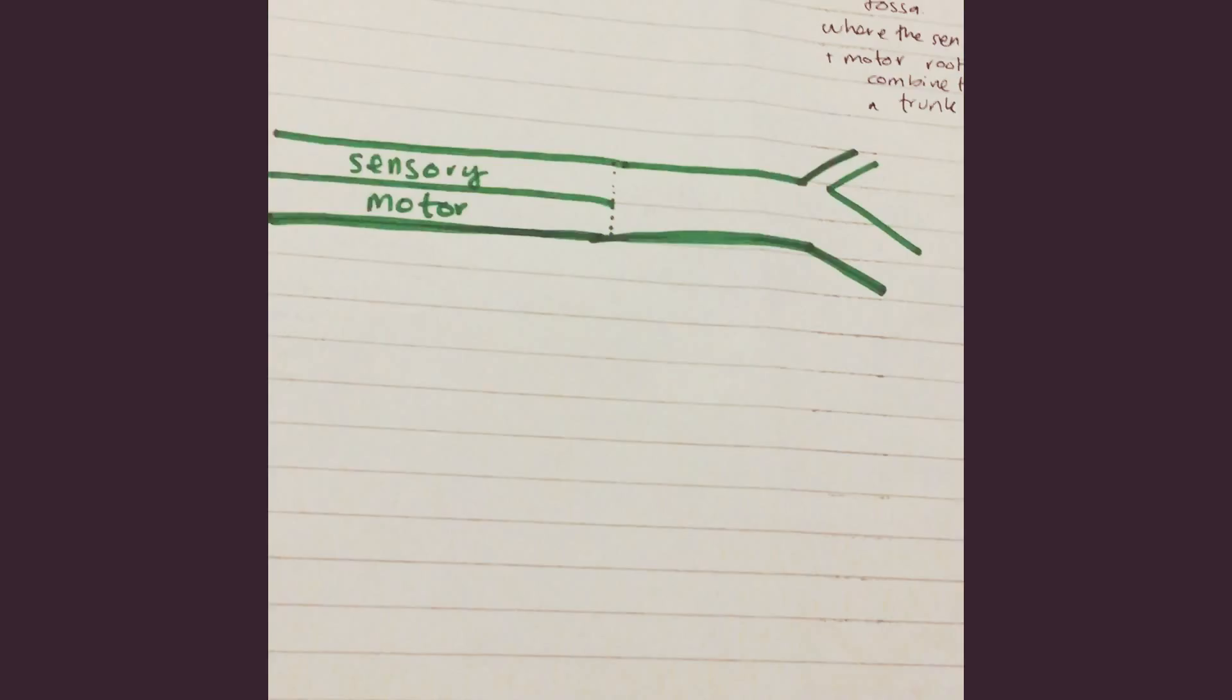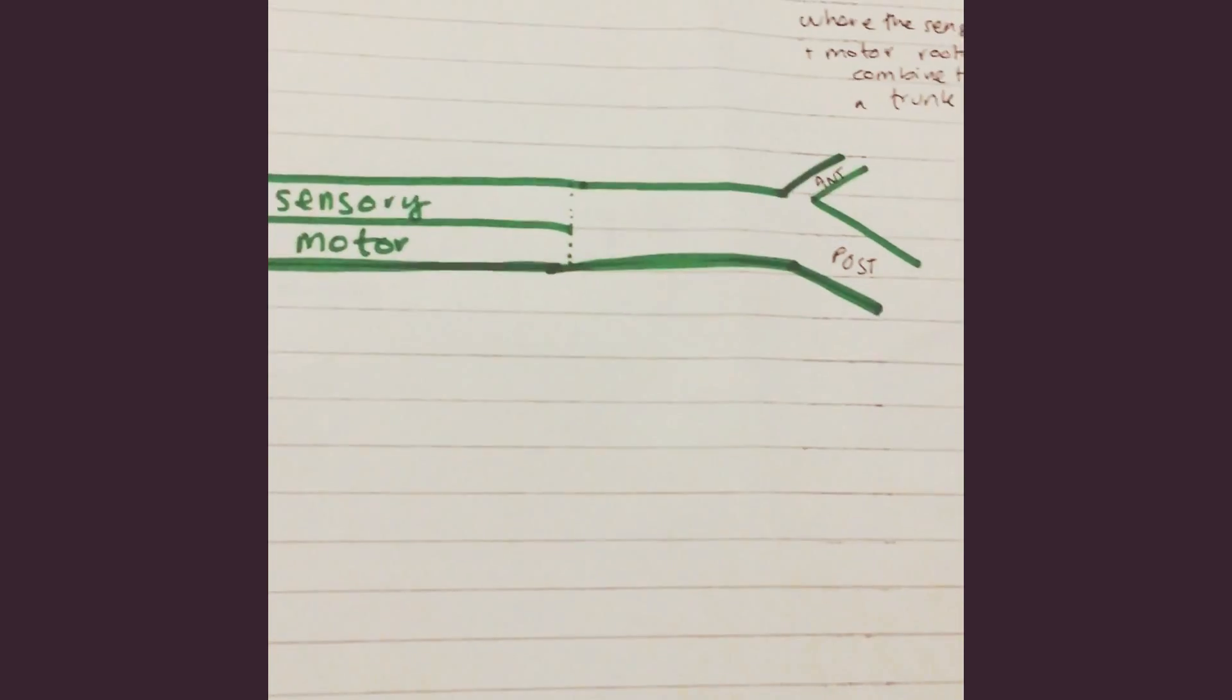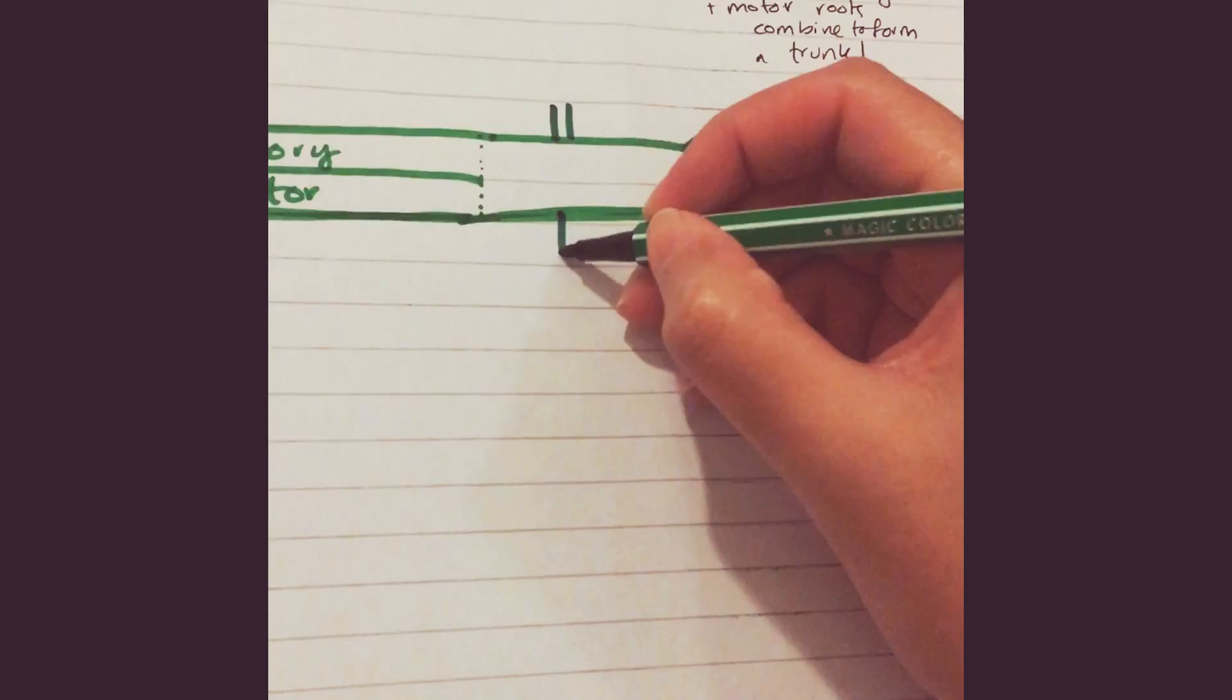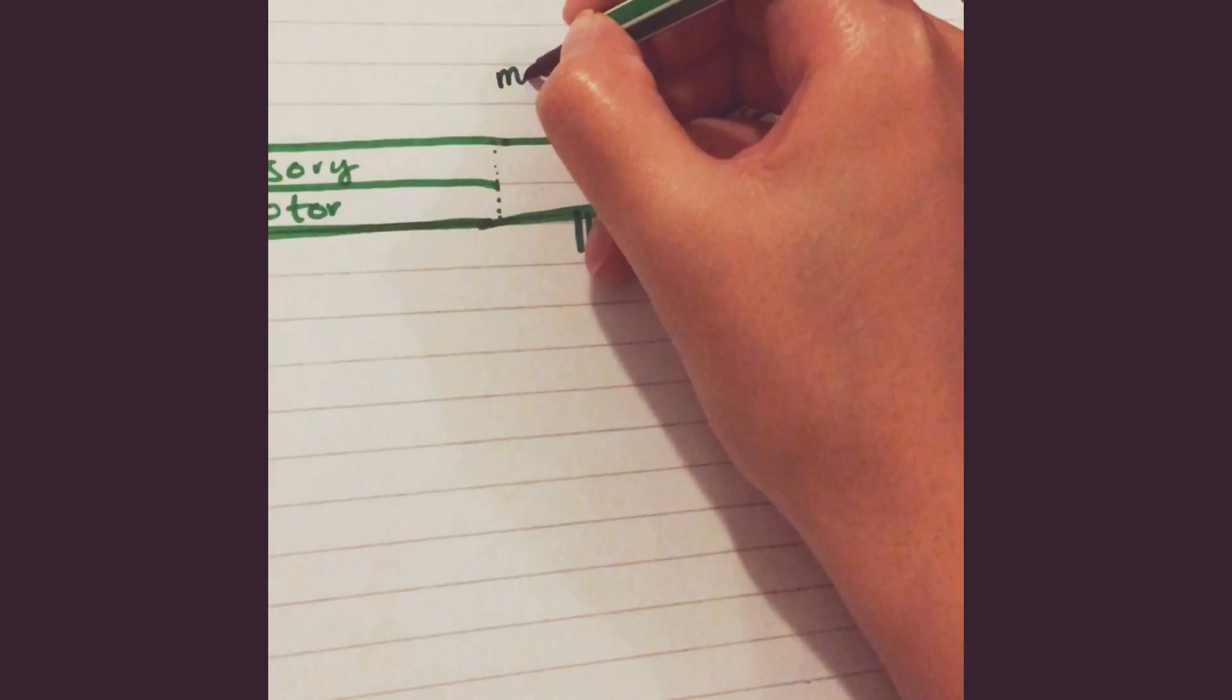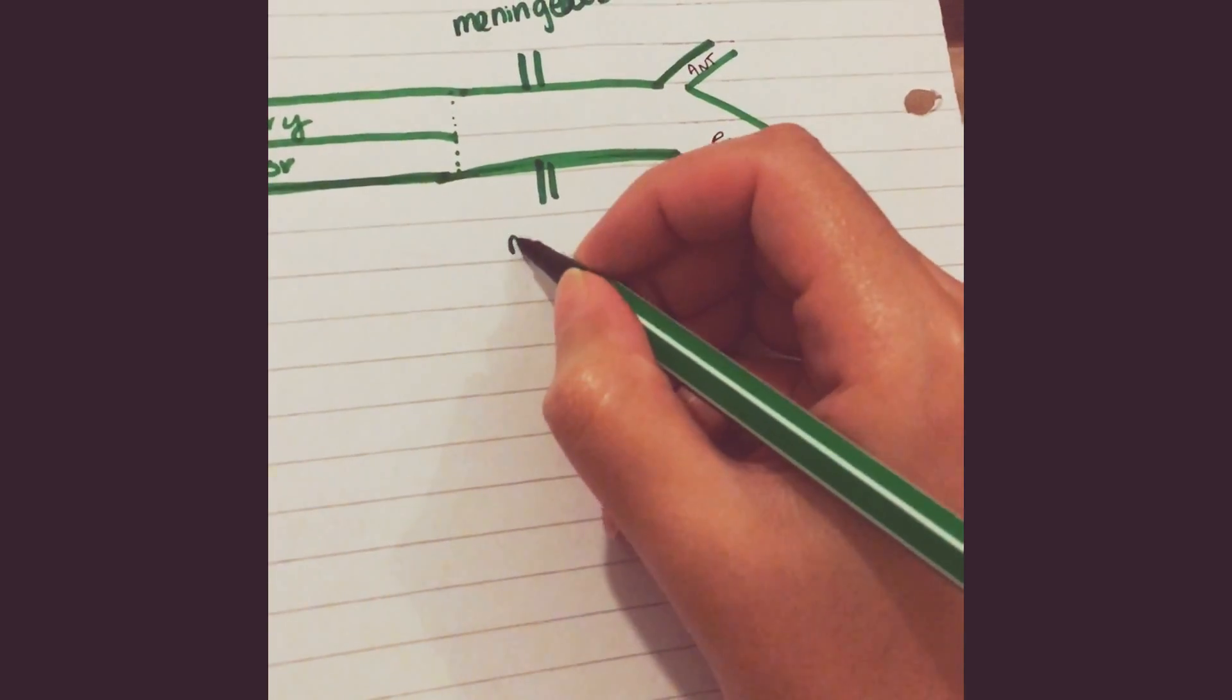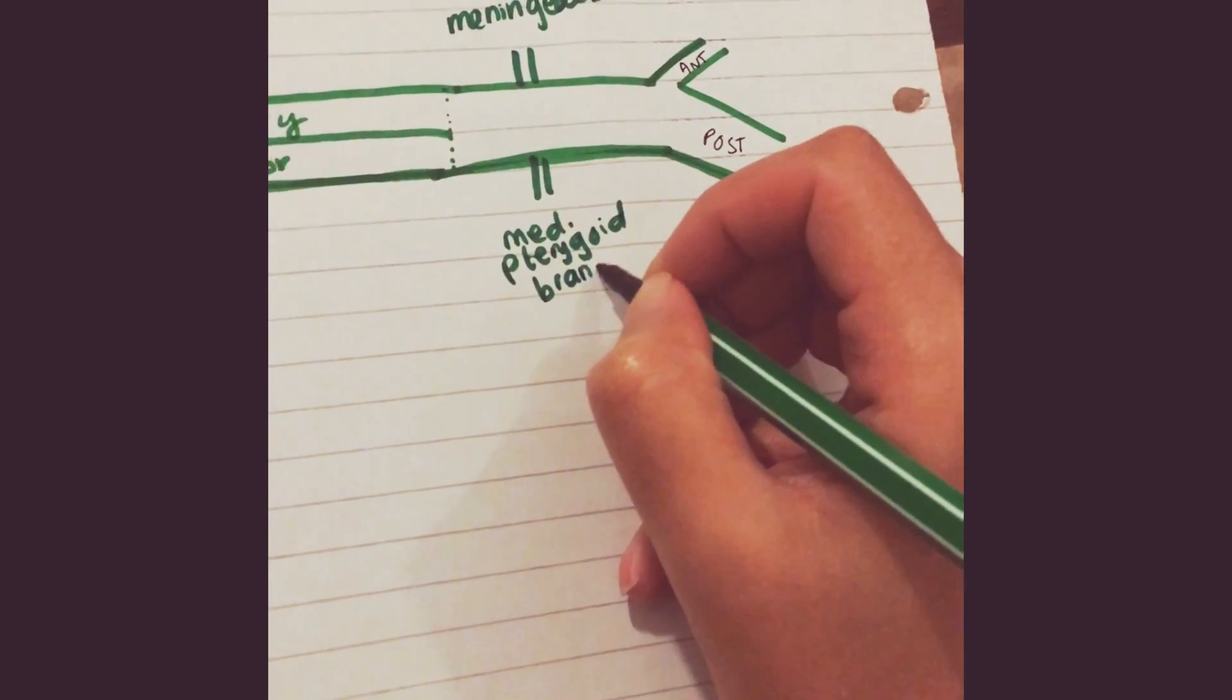It's quite simple. This is anterior and this is posterior. The main trunk gives off two branches: the meningeal branch and the medial pterygoid branch.